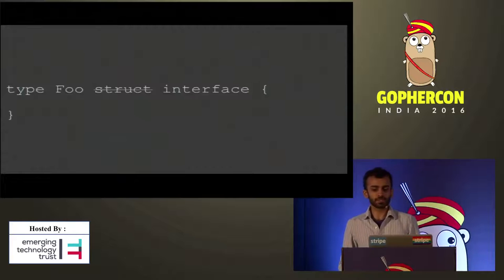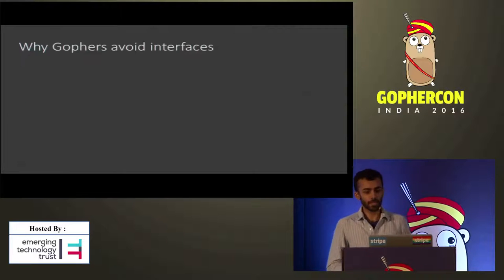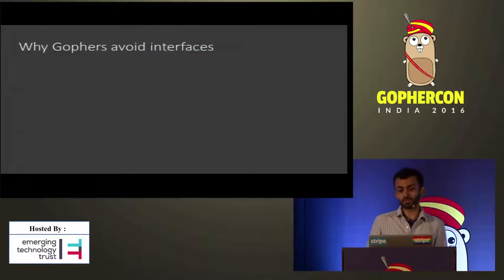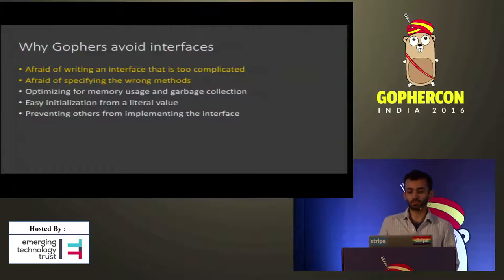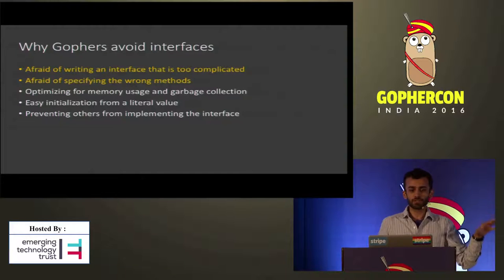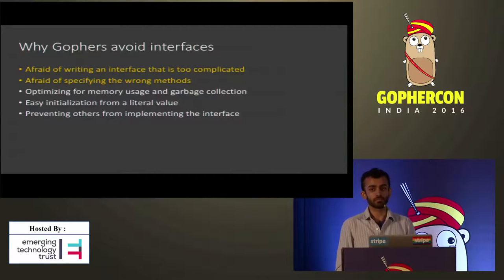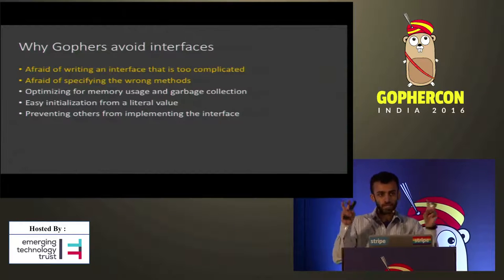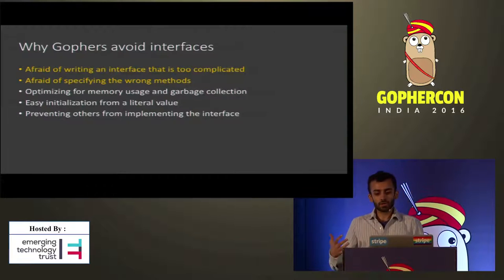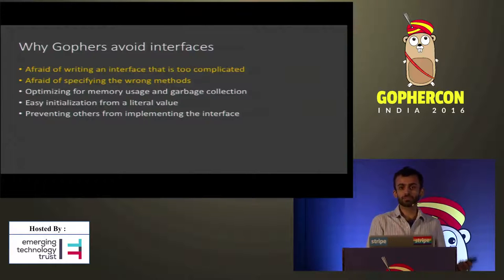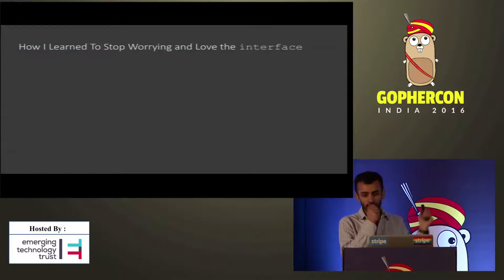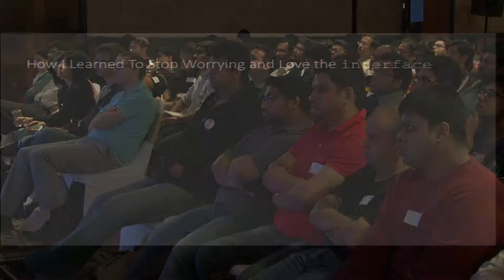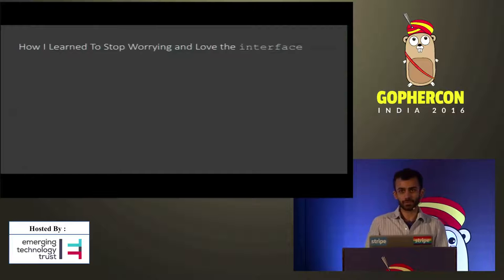Now the question is: when should we actually use an interface instead of a struct? It's easier to answer in reverse — what are the reasons we might not want to use interfaces? From my experience with GitGo and the Twitter client library, these are the five basic reasons people generally choose structs over interfaces. The first two are really just fears of writing interfaces badly or incorrectly. People see structs as the default choice, so if they don't know how to write the right interface, they just reach for a struct. Once we learn the principles for writing interfaces well, we should be much less afraid of using them as first-class citizens in our code.